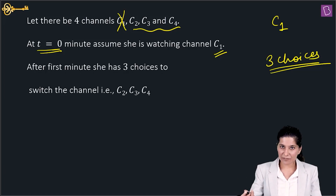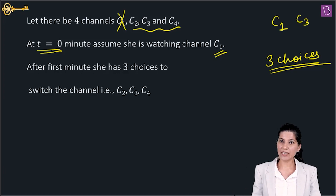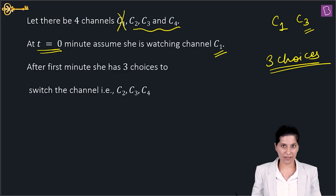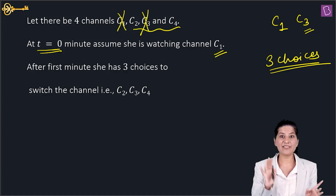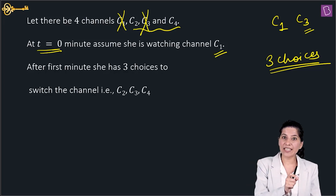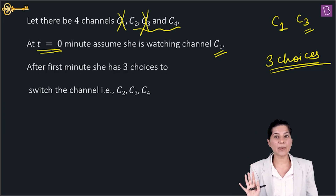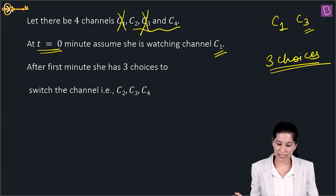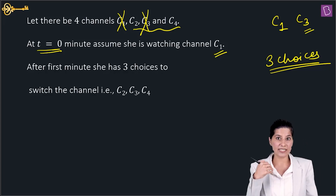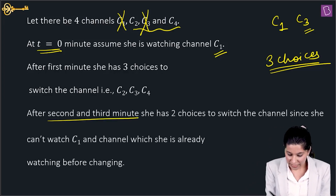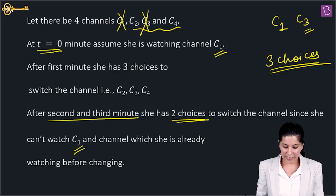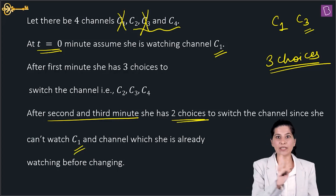Assume she switches to C3 after the 1st minute. Now at t = 2, she must change again — she can't stay on C3, and she can't go to C1 yet (she must return to C1 for the very first time at t = 4). So C1 and C3 are both excluded, leaving 2 choices. Similarly after the 3rd minute, she again has 2 choices.